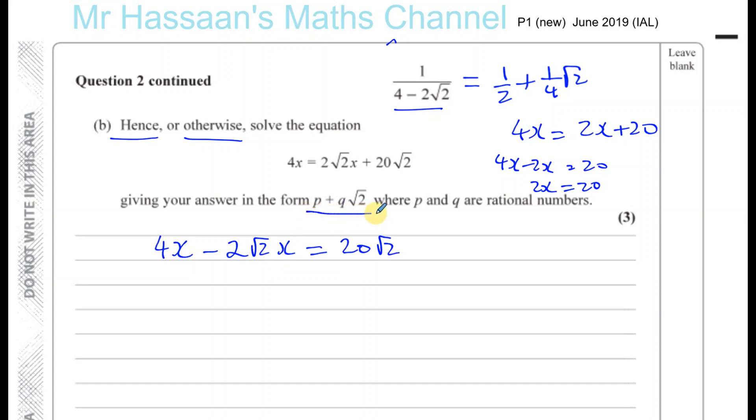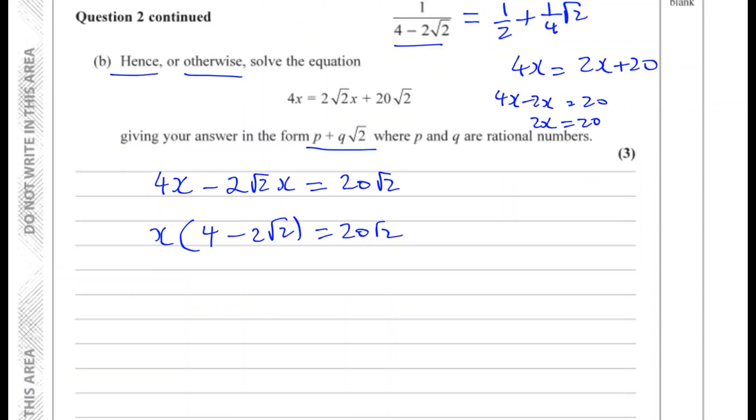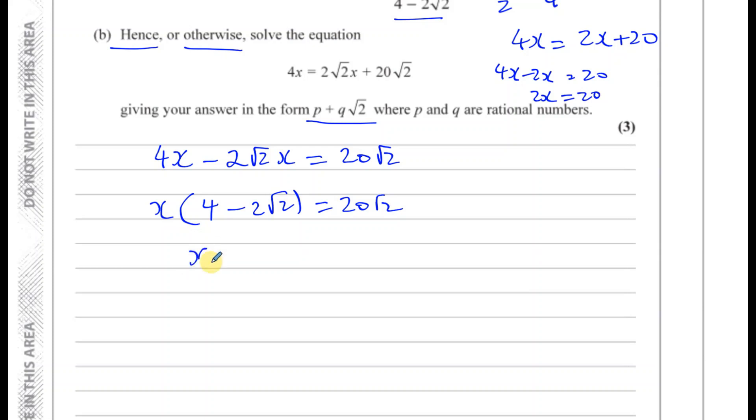So I can't just find what 2√2 is as a decimal and then subtract from 4x. So what I'm going to do is I'm going to take x as a factor and I'll be left with 4 minus 2√2. This is the same as that. If you multiply out this bracket, you get exactly the same thing. But now I've made one x term and then I can proceed by dividing both sides by 4 minus 2√2. So I have x equals 20 times √2 divided by 4 minus 2√2.